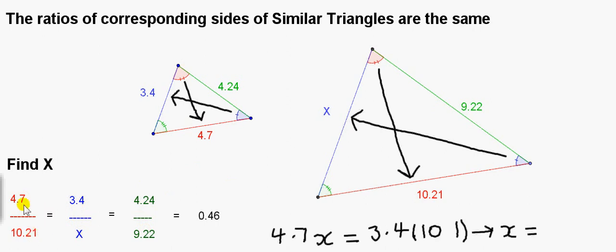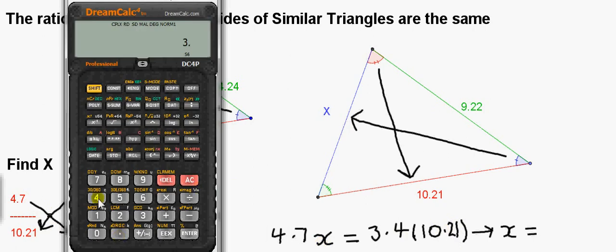I'll solve this equation using these two ratios. We have a single fraction on either side, so we can cross multiply. So 4.7 multiplied by x is equal to 3.4 multiplied by 10.21. So to find x, we multiply 3.4 by 10.21 and then divide by 4.7. So we get x equals 7.39 to two decimal places.